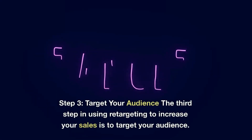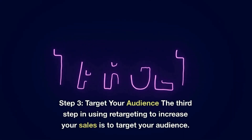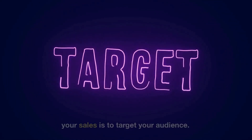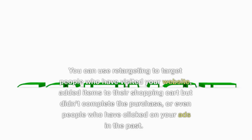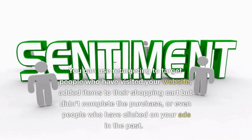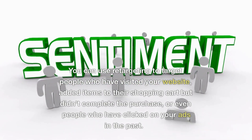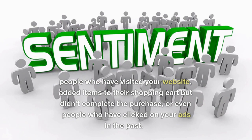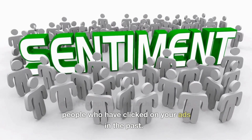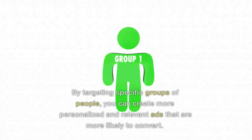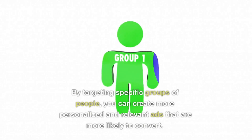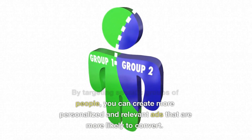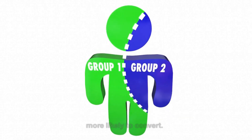Step 3: Target your audience. The third step in using retargeting to increase your sales is to target your audience. You can use retargeting to target people who have visited your website, added items to their shopping cart but didn't complete the purchase, or even people who have clicked on your ads in the past. By targeting specific groups of people, you can create more personalized and relevant ads that are more likely to convert.